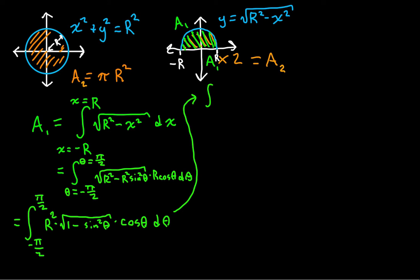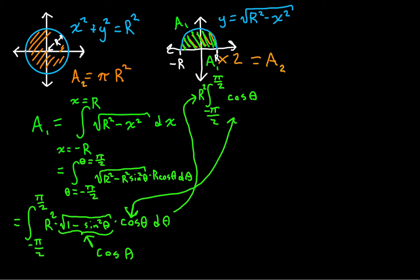We're going to have the integral, and I'm going to pull that r squared out as a coefficient. We're going from negative pi over 2 to pi over 2 of the square root of 1 minus sine squared theta — which is actually cosine squared theta from the Pythagorean identity. Taking the square root gives us just cosine of theta. And we're multiplying by cosine theta as well. So we're actually taking the integral of cosine squared of theta with respect to theta.